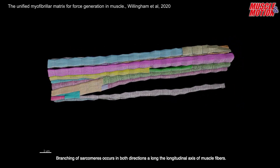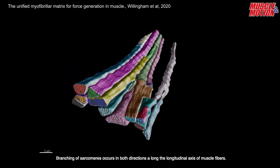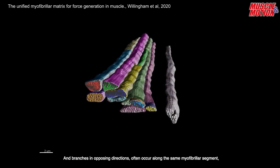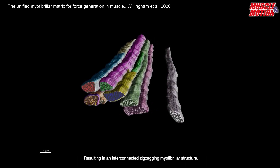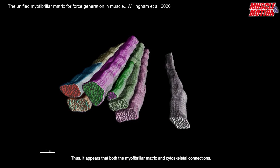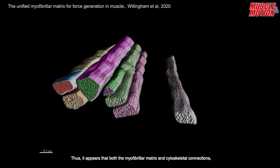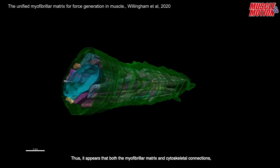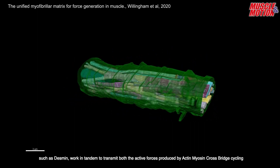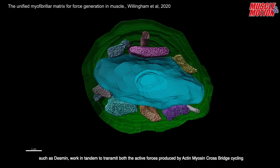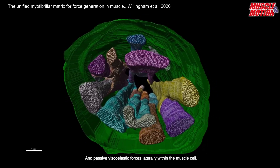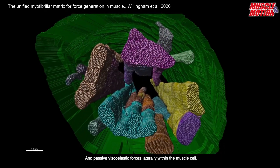Branching of sarcomeres occurs in both directions along the longitudinal axis of muscle fibers, and branches in opposing directions often occur along the same myofibrillar segment, resulting in an interconnected zigzagging myofibrillar structure. Thus it appears that both the myofibrillar matrix and the cytoskeletal connections such as desmin work in tandem to transmit both the active forces produced by actin-myosin crossbridge cycling and passive viscoelastic forces laterally within the muscle cell.